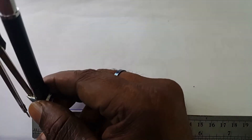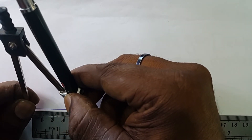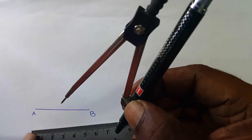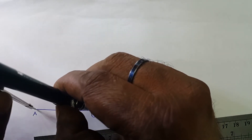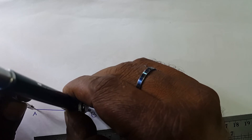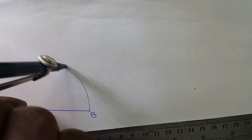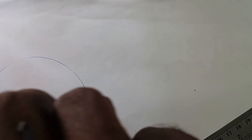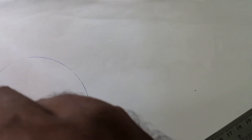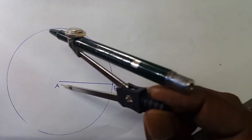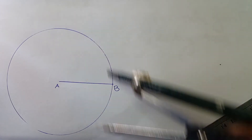This line AB is 50mm in length. This is 50mm, and this is also 50mm. Now, compass point erected on the point A, by using this 50mm radius, draw a circle here.